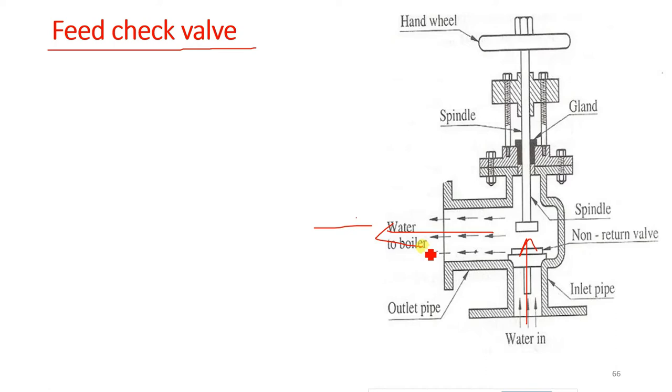Feed check valve is mounted on the boiler chest in the water region, just below the level of water. This is a boiler wall and this is mounted on the boiler wall with the help of flanges bolted on the flanges.